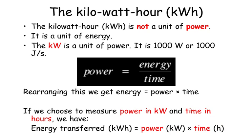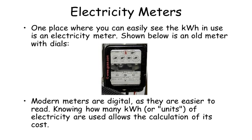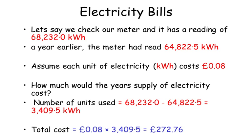One place where you can easily see the kilowatt hour in use is an electricity meter. This is an old style meter with little dials and a disc that spins around. However, modern meters are now digital as they're easier to read. Knowing how many kilowatt hours or units of electricity are used allows you to calculate how much it's going to cost.